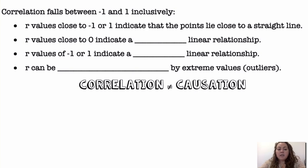So, some things you need to know about correlation. Correlation always falls between negative 1 and 1 inclusively, meaning it can be equal to negative 1 and it can be equal to positive 1. R values close to negative 1 or 1 indicate that the point lies close to a straight line. Alright, so it's either positive or negative. That's where the positive or negative tells you the direction. Is it increasing or is it decreasing as you read it from left to right?